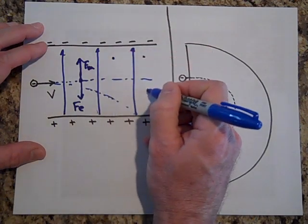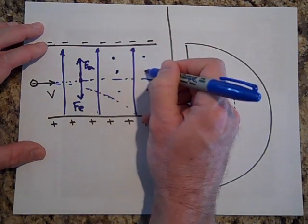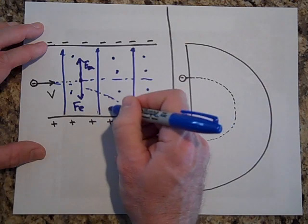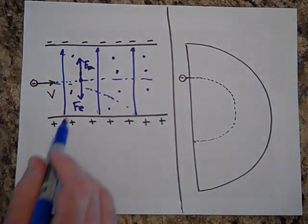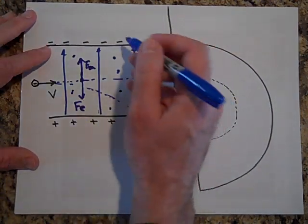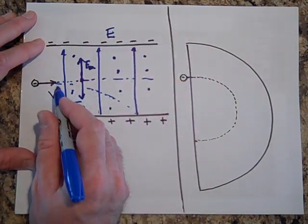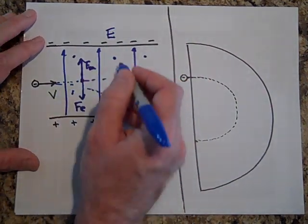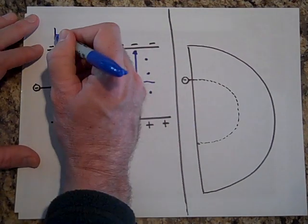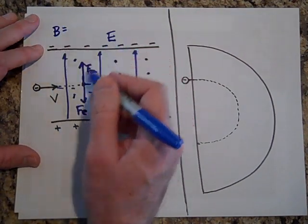Could you tell me how strong that field should be? If I know the electric field here is E and I know this is v, could you tell me how strong the magnetic field should be? What should B be in terms of E and v?